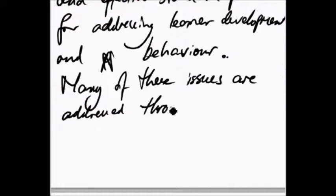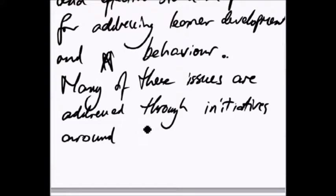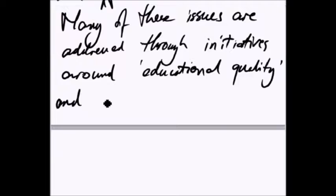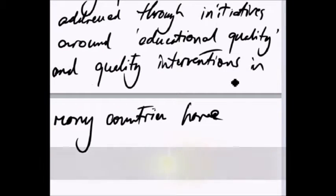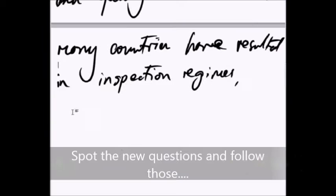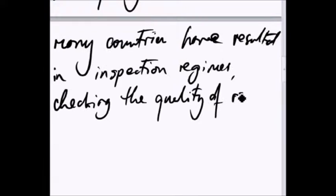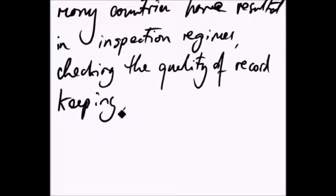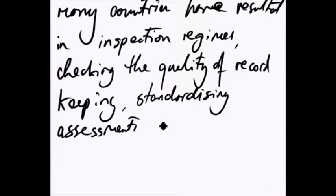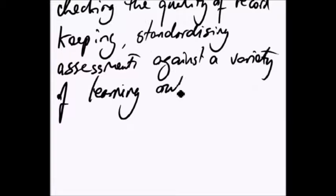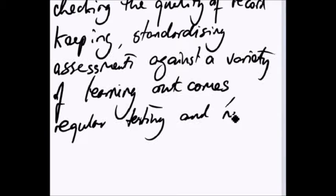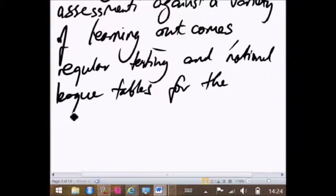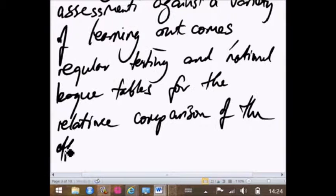Many of these issues are addressed through initiatives around educational quality. That's what we need to say. Yes. Now, so this is about quality. This whole question about why is education rubbish is all about quality and quality interventions in many countries. Okay, let's talk about that because we can list those resulted in inspection regimes, tracking the quality of record keeping, standardizing assessments against a variety of learning outcomes. Learning outcomes are very important for quality, regular testing and national league tables, the relative comparison of the effectiveness of teaching and learning.